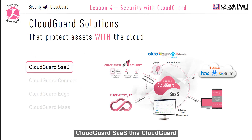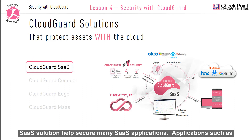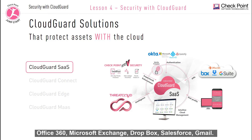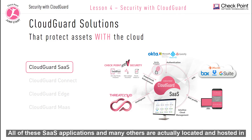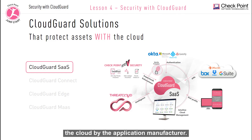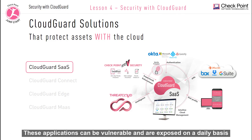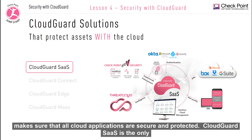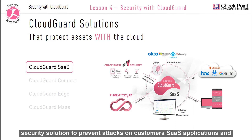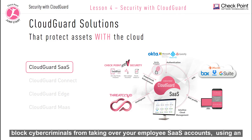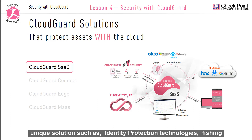CloudGuard SaaS helps secure many SaaS applications such as Office 365, Microsoft Exchange, Dropbox, Salesforce, and Gmail. All of these SaaS applications are hosted in the cloud by the application manufacturer and can be vulnerable to potential breaches on a daily basis. CloudGuard SaaS is the only security solution to prevent attacks on customers' SaaS applications and block cyber criminals from taking over employee SaaS accounts using identity protection technologies, phishing protection, data leakage prevention, and zero-day threat prevention.